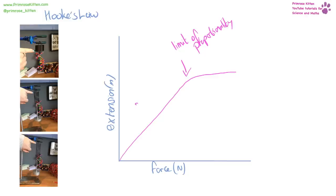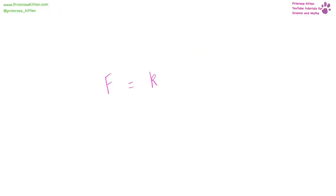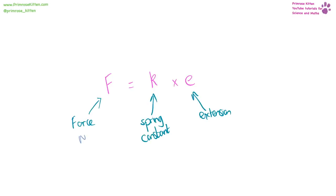Before the limit of proportionality, as we increase force, the extension increases proportionally. After the limit of proportionality, no matter how much force you add, it will not stretch anymore and may snap. Force equals the spring constant times extension. Force in newtons, extension in meters, and the spring constant in newtons per meter.